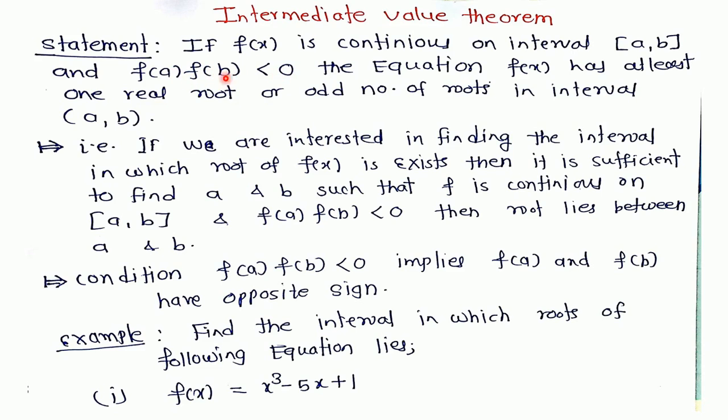f(a) × f(b) < 0 means f(a) and f(b) have opposite signs. Then the equation f(x) has at least one real root or odd number of roots in the open interval (a, b).